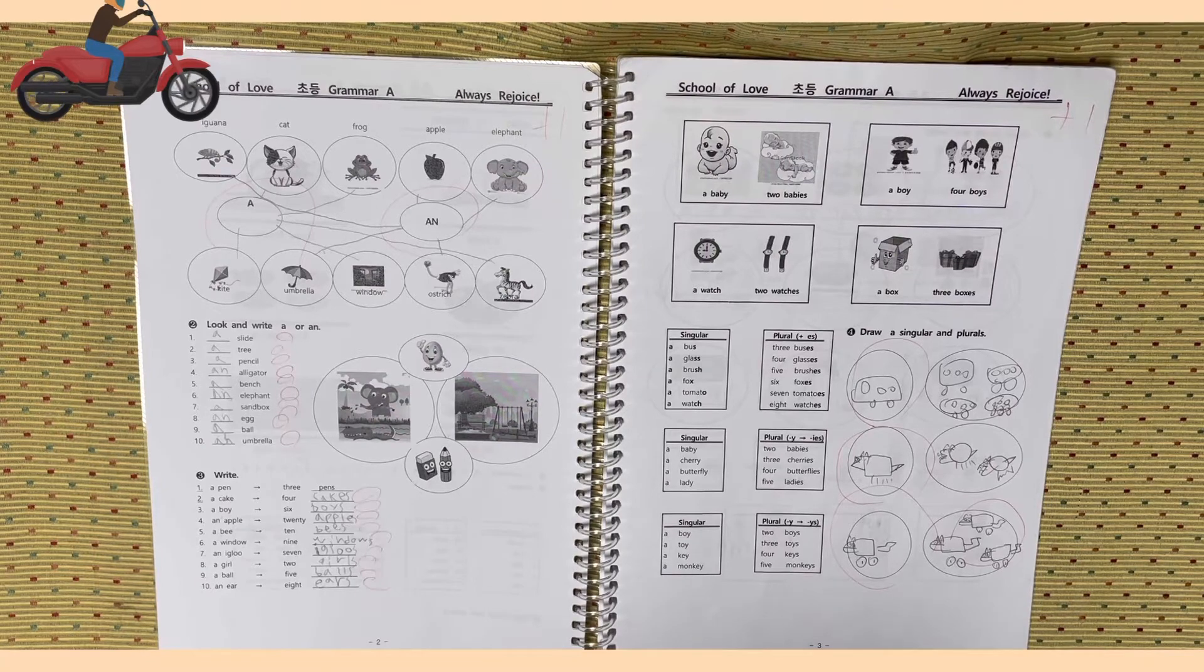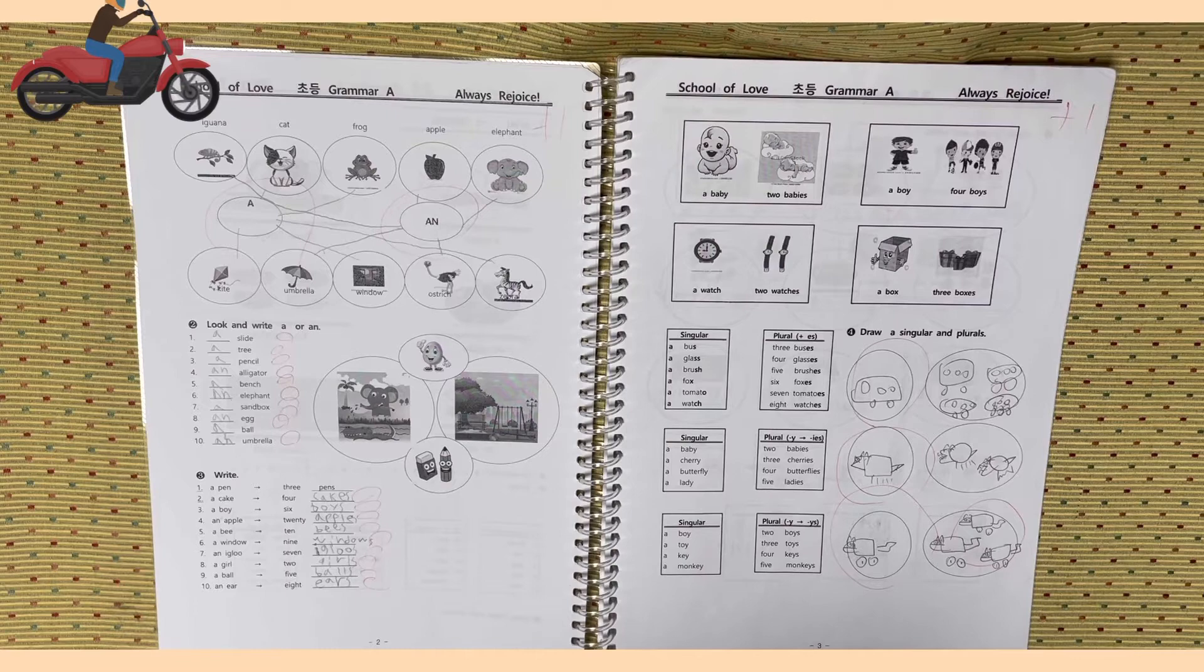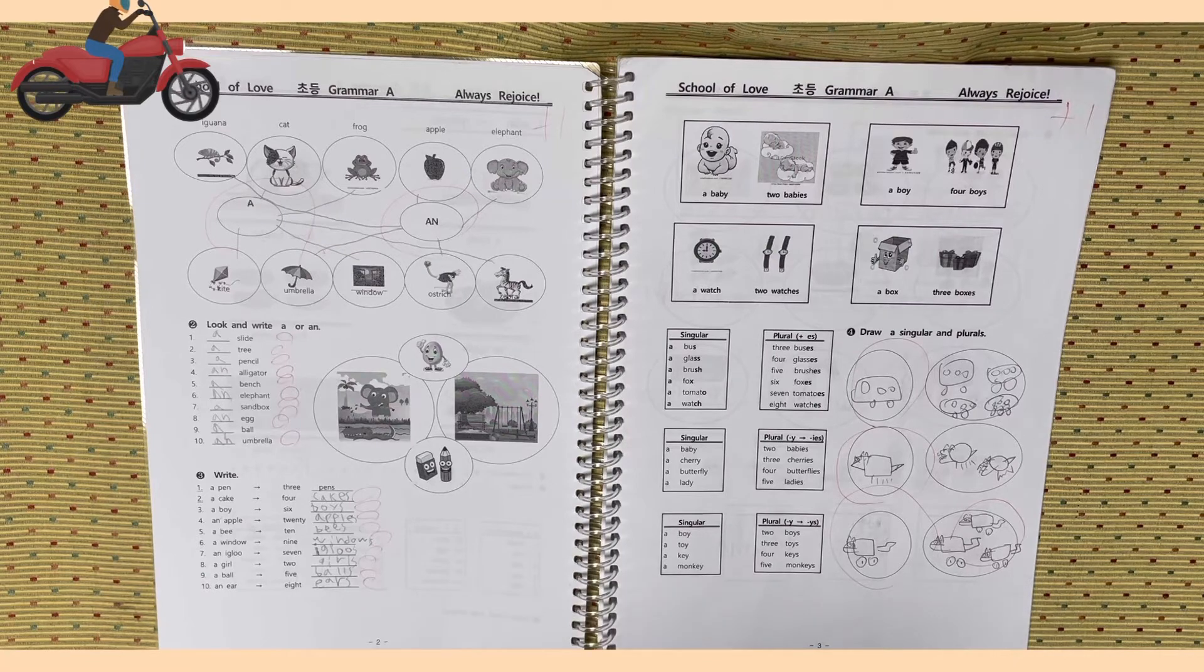Number 1. Blank slide. 2. Blank tree. 3. A blank pencil. 4. Blank alligator. 5. Blank bench. 6. Blank elephant. 7. Blank sandbox. 8. Egg. 9. Ball. 10. Blank umbrella. Activity 3.